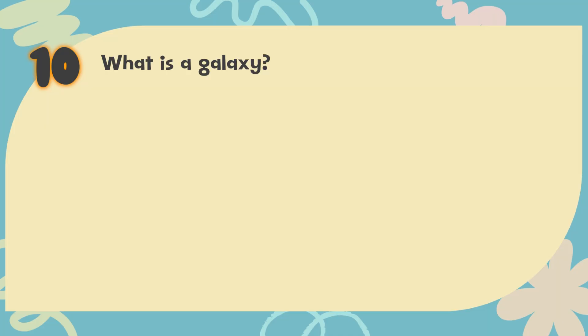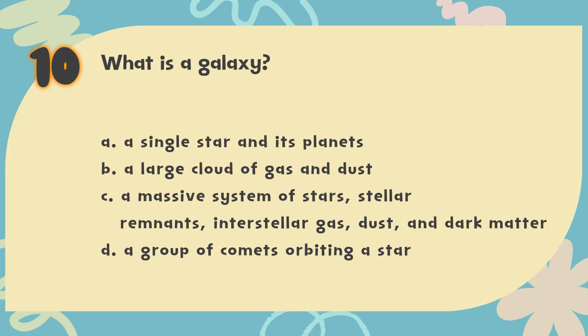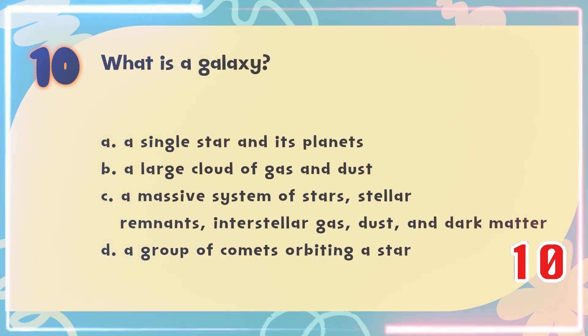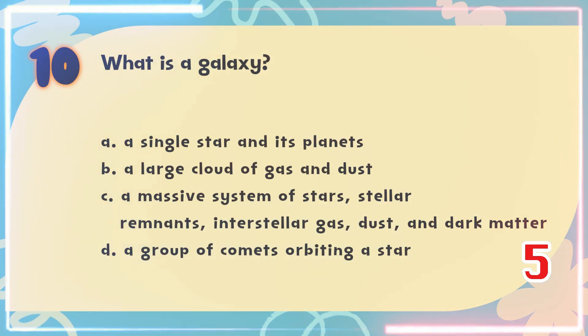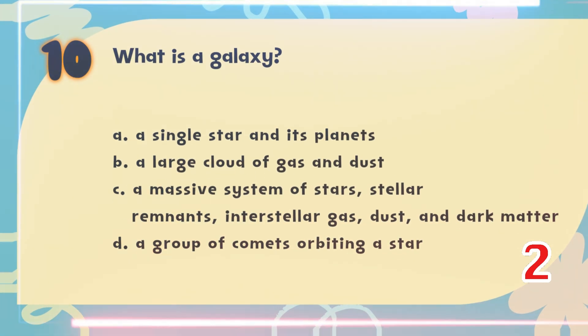Number 10. What is a galaxy? The choices are: A. A single star and its planets. B. A large cloud of gas and dust. C. A massive system of stars, stellar remnants, interstellar gas, dust, and dark matter — a huge collection of celestial bodies bound together by gravity. D. Our solar system is part of the Milky Way galaxy.